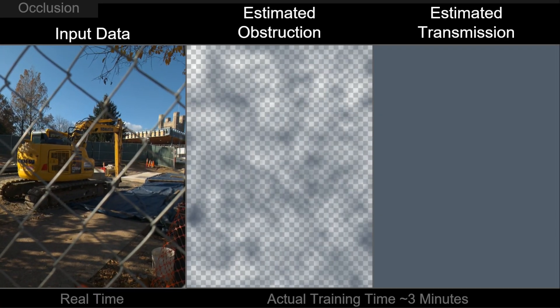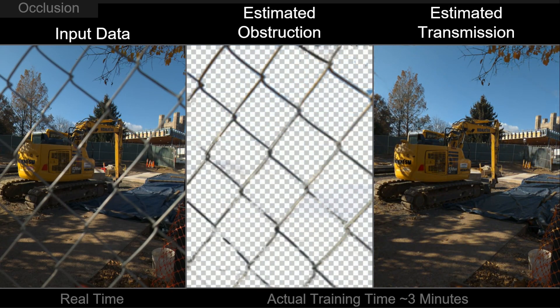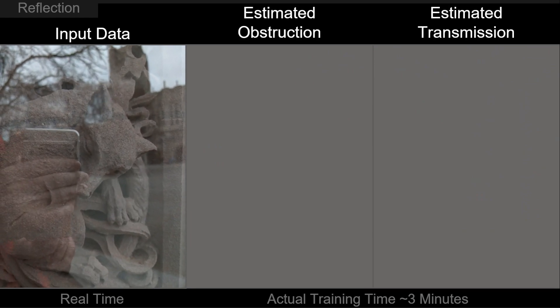With only a couple minutes of training time, our model is able to completely remove the fence from in front of this tractor, and we can separate the reflection from this fox statue.